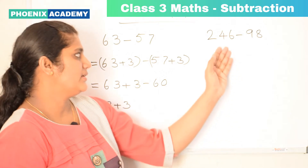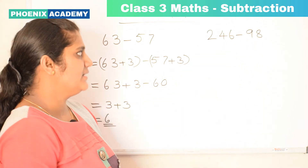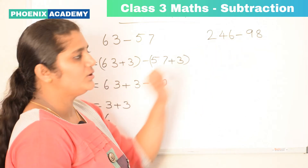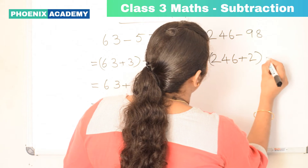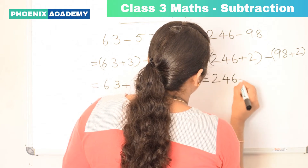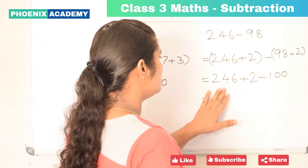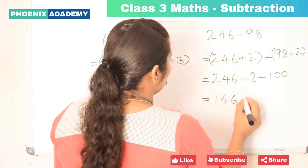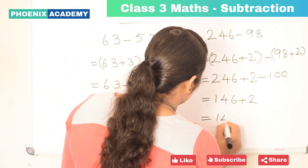Let's try this example: 246 minus 98. Here we are going to subtract 98 from 246 by making the smaller number 98 a multiple of 100 by adding 2 to both numbers. 246 plus 2 minus 98 plus 2 gives us 248 minus 100. Let's subtract 100 from 248: that is 146 plus 2, which is 148.